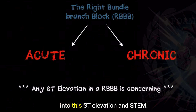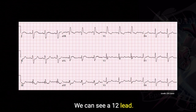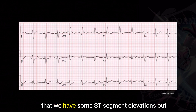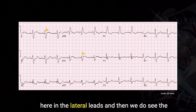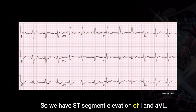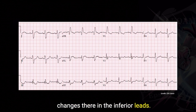I wanted to dig a little bit more into ST elevation and STEMI in a right bundle branch block. Here's an example — we can see a 12-lead that looks otherwise unremarkable, but we do notice some ST segment elevations out in the lateral leads, and we see the reciprocal changes out in the inferior leads. We have ST segment elevation in AVL — it's a lateral STEMI, with reciprocal changes in the inferior leads.